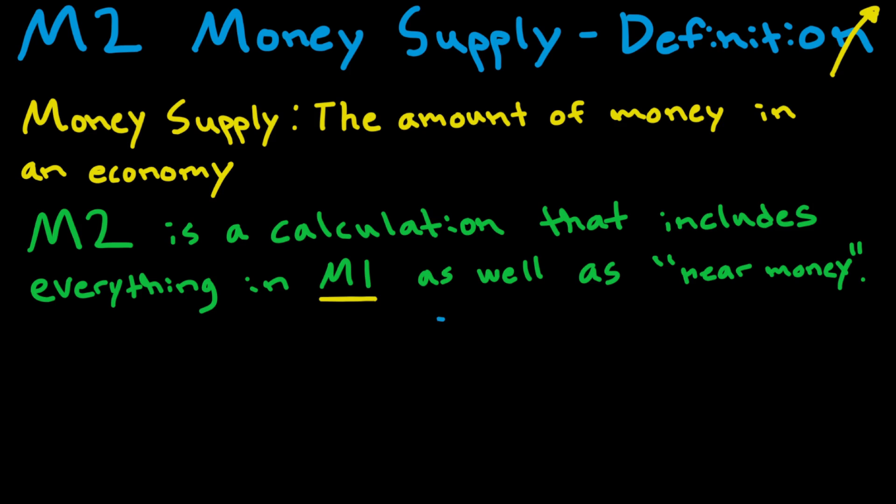We can illustrate this. Everything inside this circle is M2. We also know that M1 is a part of M2, so we can write that M1 is here. I really recommend you watch the video about the M1 money supply, but we can just say for short what it includes here.